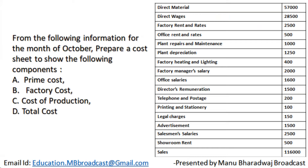The question is on the screen. Kindly take a screenshot of the question. From the following information for the month of October, prepare a cost sheet to show the following components: prime cost, factory cost, cost of production, and total cost.